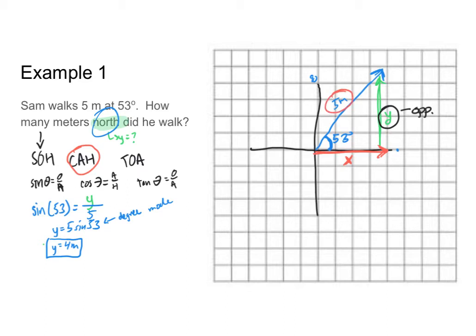So what I'll say is that the cosine of 53 is equal to x over 5. x is equal to 5 times the cosine of 53. And throwing that into a calculator in degree mode, I get that x is approximately 3 meters. So Sam walked 4 meters north, 3 meters east. I know my problem was just asking you to find north, but I wanted to make sure you could also find the x component of your vectors.